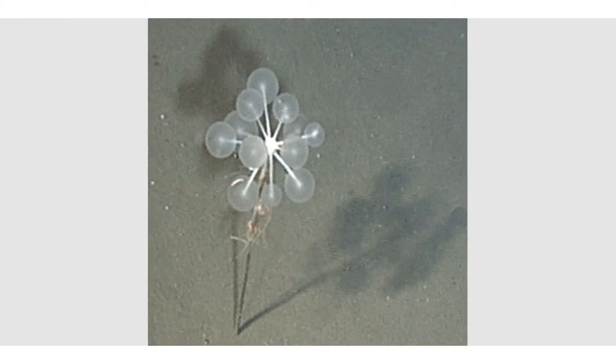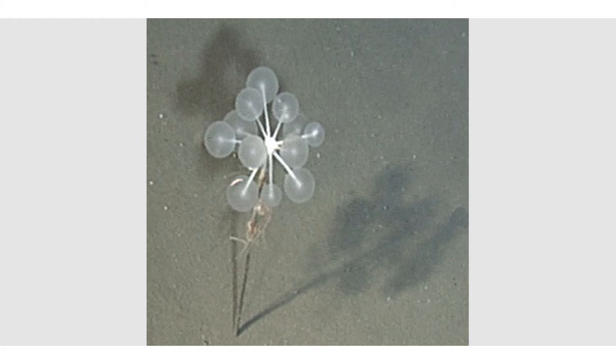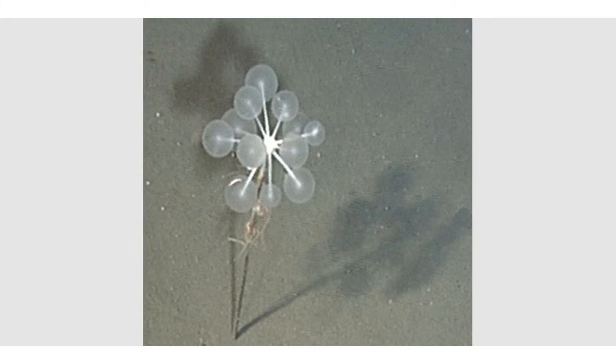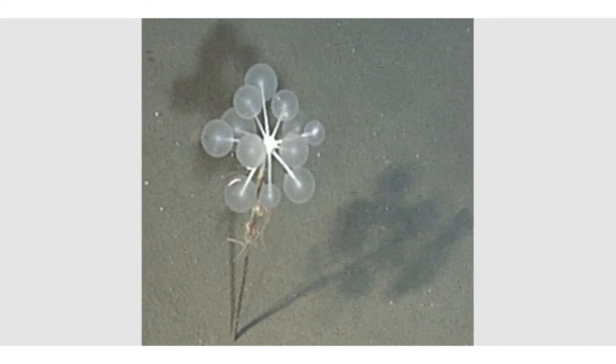This little sponge Chondrocladia has turned into a carnivorous lifestyle. It has tree-like branches with sharp spikes that it uses to impale swimming prey.